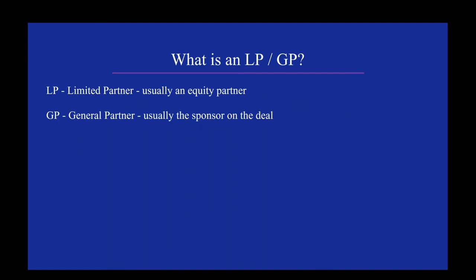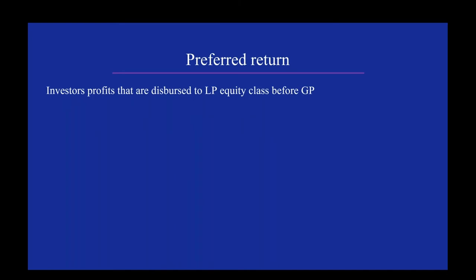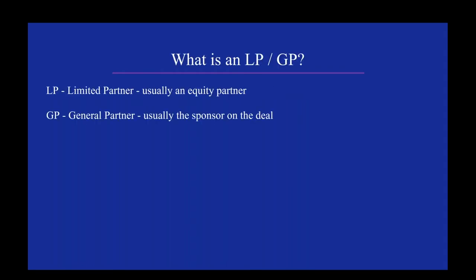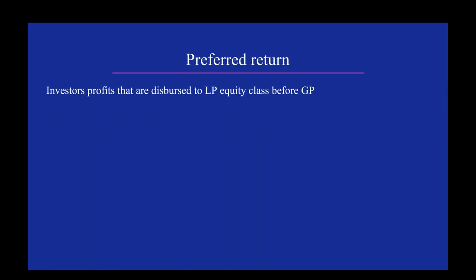An LP, or limited partner, is usually an equity partner — that would be you as the investor in a big multifamily deal. A GP, or general partner, is usually the sponsor on the deal. Scott notes: if your IRA is investing in this type of deal, your IRA is going to be the LP. If you as an individual are the GP, then your IRA typically cannot invest in that same deal. Like the Jane and Rocky example — Jane was the LP, Rocky was the GP.